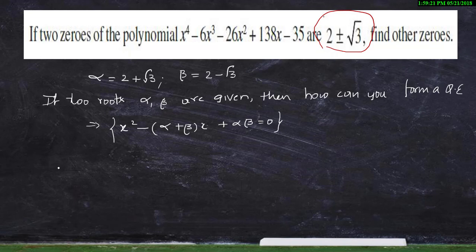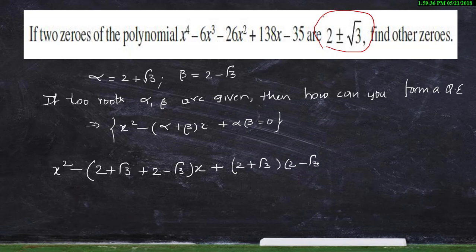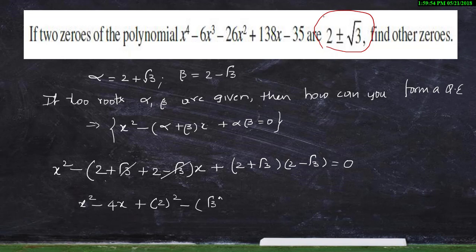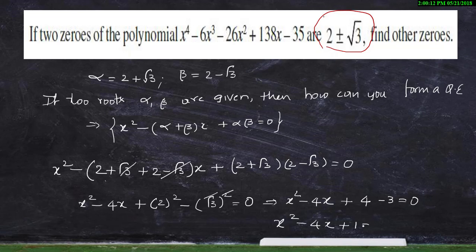Now we will form that quadratic equation: x² - [(2 + √3) + (2 - √3)]x + (2 + √3)(2 - √3) = 0. The √3 terms cancel, giving 2 + 2 = 4. Using the identity (a+b)(a-b) = a² - b², we get 2² - (√3)² = 4 - 3 = 1. So the equation becomes x² - 4x + 1 = 0.